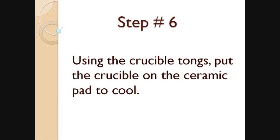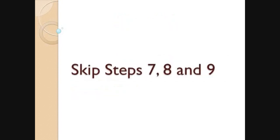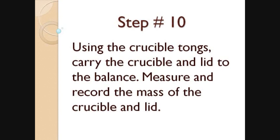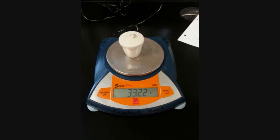In this lab we can ignore steps 7, 8, and 9 because we are using magnesium stones, not magnesium turnings. Using the crucible tongs, carry the crucible and lid to the balance, and measure and record the mass of the crucible with lid. We are measuring the mass of crucible, lid, and magnesium oxide — this refers back to step 3. The mass we got from step 10 was 33.22 grams.